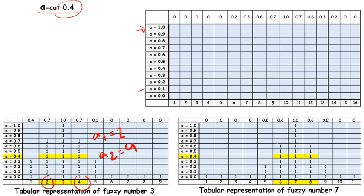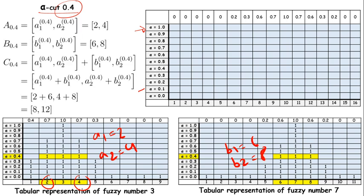For fuzzy number 7 we got B1 is 6 and B2 is 8. If you just plug these values in this formula, we will get new intervals for alpha-cut 0.4, which means 8 to 12. That's why the new number alpha-cut should start from element 8 and it ends at element 12.